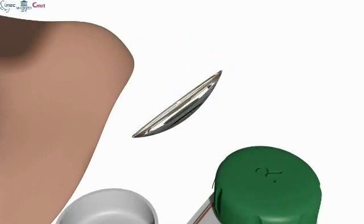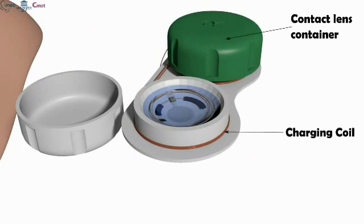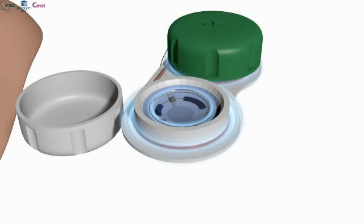In order to charge the lens, the user takes it out and sets it in the case. You can see here there's a coil around the outside of the cup, and RF induction charging is used between the coil on the lens and the coil on the cup.